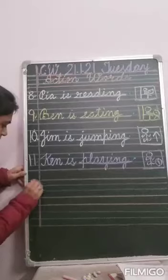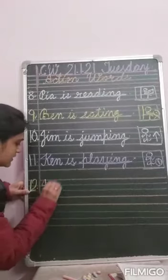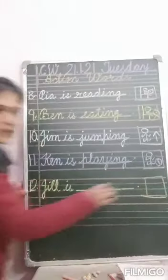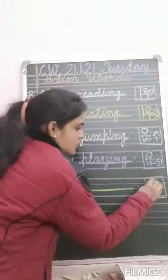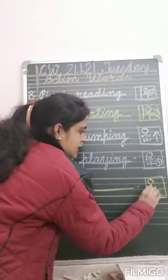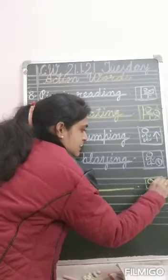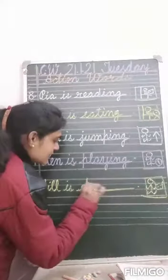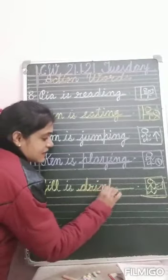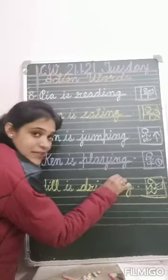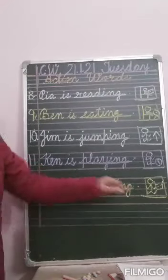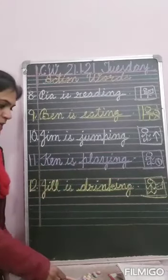Number twelve. Jill is dash. See — Jill is here and he is holding a glass. So he is drinking. Jill is drinking. Write down drinking. D-R-I-N-K-I-N-G. Jill is drinking.